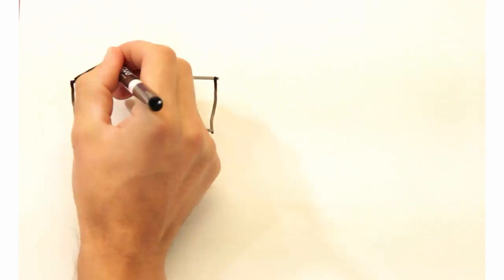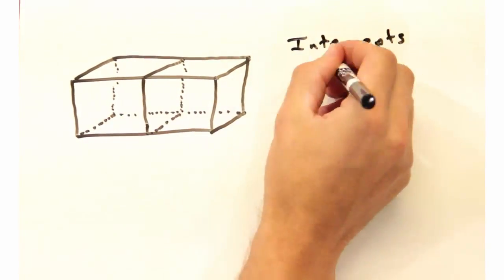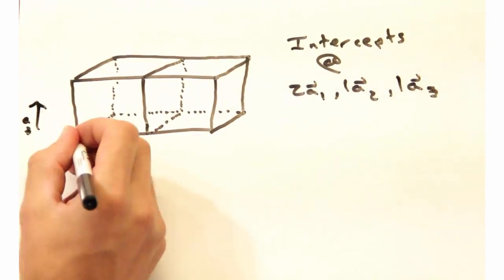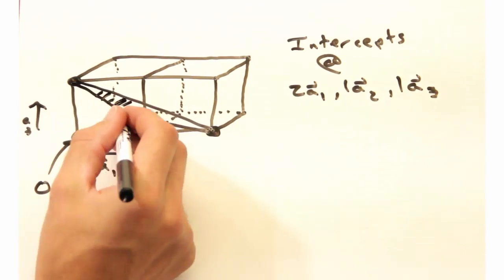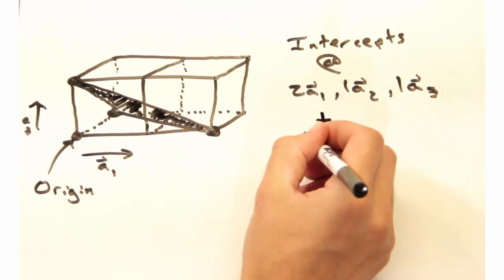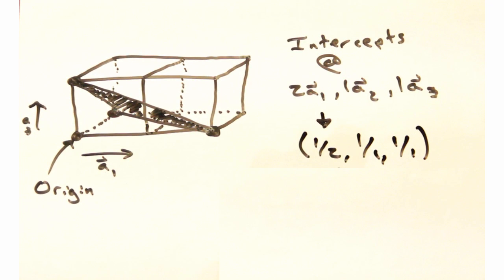That was a bit too easy. How about I try this plane here? It intersects at 2a1, 1a2, and 1a3. Taking the reciprocal of each gives us 1 half, 1, and 1. So this would be the 1 half, 1, 1 plane.